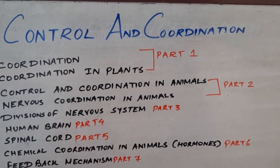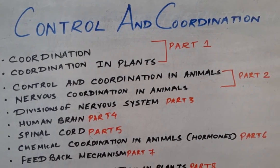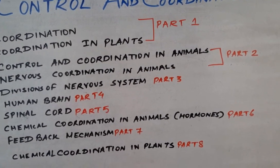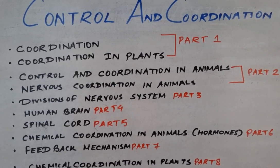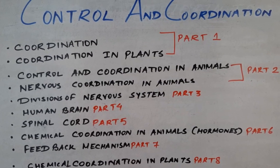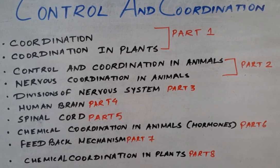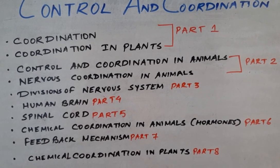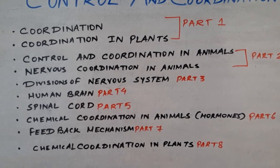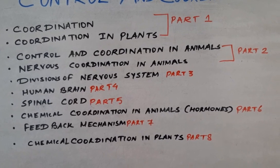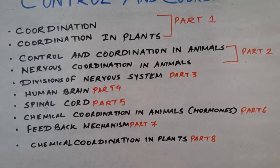In biology, Control and Coordination is also a bit lengthy chapter, like the previous chapter Life Processes. I will divide this chapter into various parts with separate videos. The first video covers the introductory part and coordination in plants. The second video will be about control and coordination in animals and nervous coordination. The third will cover the division of the nervous system, the fourth the human brain, and the fifth the spinal cord.